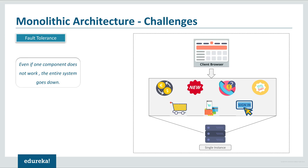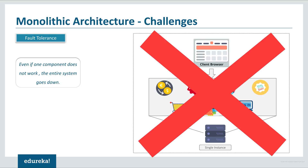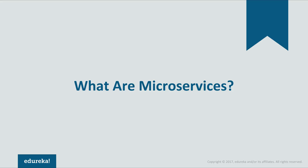The third challenge is fault tolerance. Consider your shopping cart application — even if one feature of the application doesn't work, the entire system goes down. This not only creates a problem for users but also for developers, as they have to rebuild it again. To avoid these challenges, developers decided to shift from monolithic architecture to microservices.